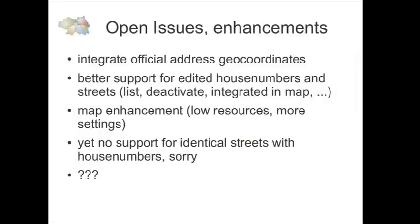I have some open issues and enhancements. I want to integrate the official address coordinates we have for four municipalities - I haven't imported them yet but I need to use them to provide better GPX output so users can find where the missing house numbers are. I also need to make better support for the list of house numbers we haven't found, because this list is a feedback channel for the local government. We can create a list, give it to the local government and say: please check if you really have these house numbers in the correct position on the street, because we didn't find them. This is a win-win situation with the government when they give us a house number list.